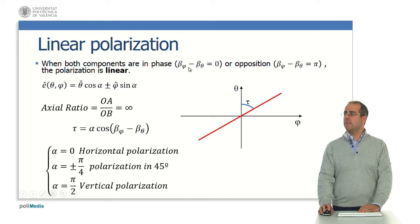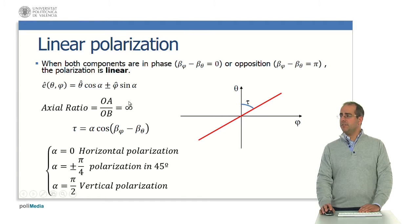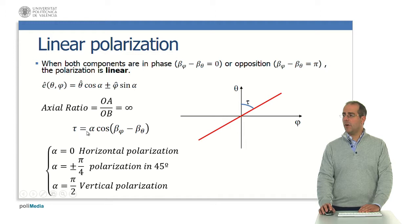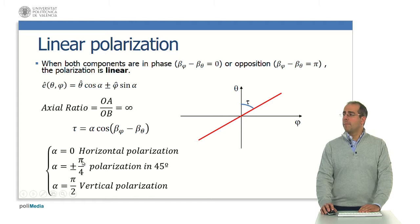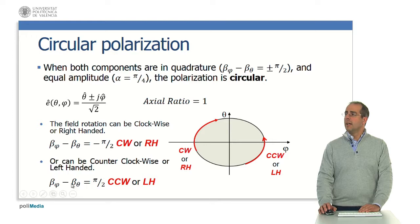For linear polarization, when both components are in phase — so beta-phi minus beta-theta is zero — or in opposition, so beta-phi minus beta-theta is π (180 degrees), the polarization is linear. The polarization unit vector is expressed in terms only of alpha. The axial ratio of a linear polarization is infinity, and the polarization angle is defined in terms of alpha, beta-phi, and beta-theta. When alpha is zero, we have horizontal polarization. When alpha is minus π/4, we have polarization at 45 degrees. When alpha is π/2, we have vertical polarization at 90 degrees.